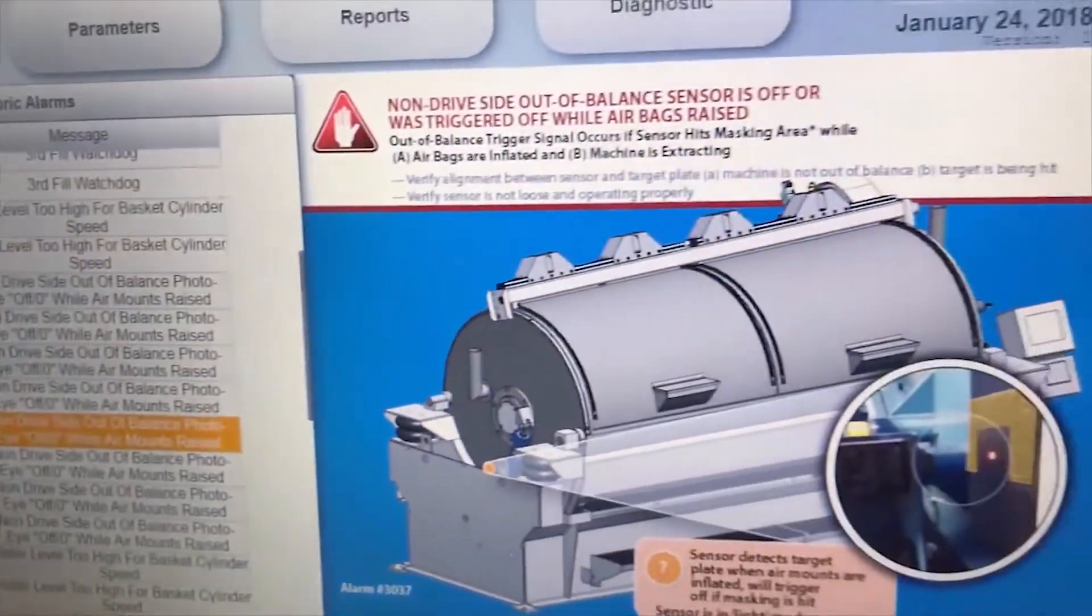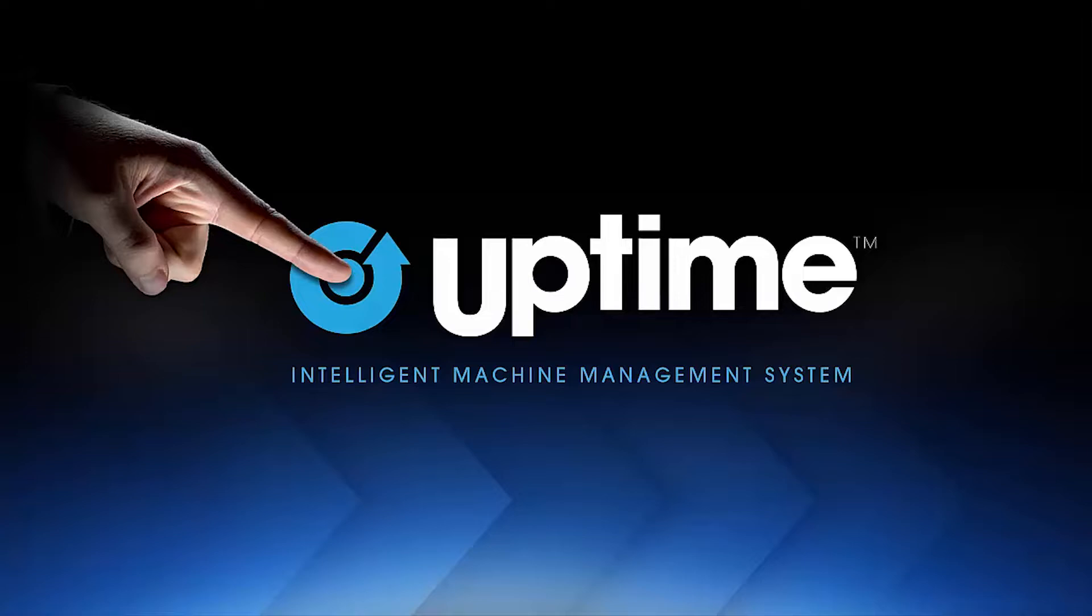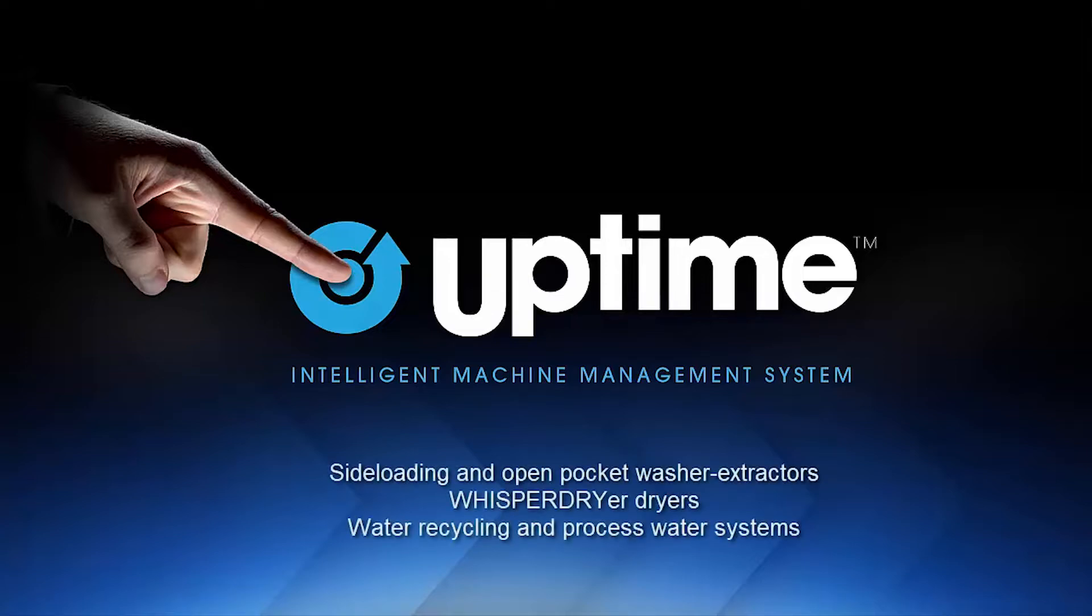Just the latest example of more than a century of Ellis innovations. The Uptime Intelligent Machine Management System is now included in all Ellis equipment.